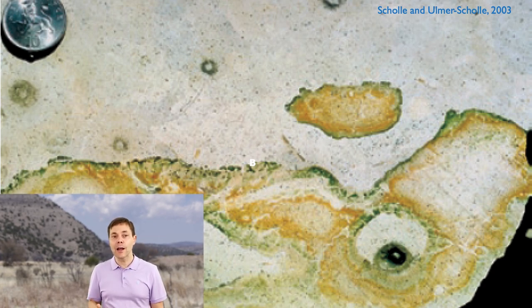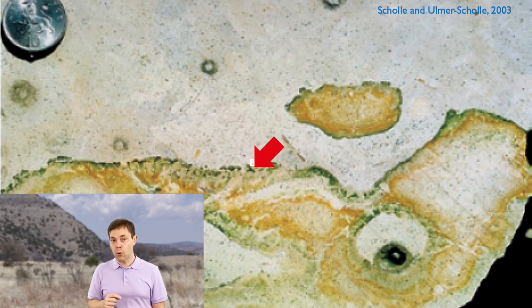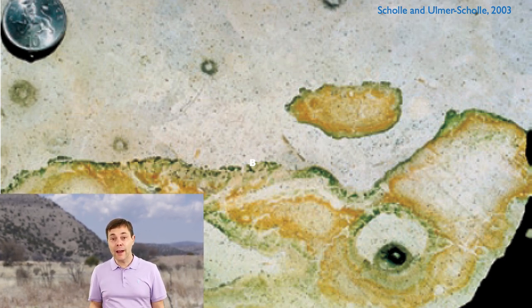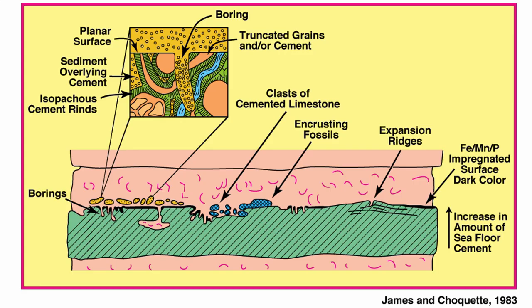Here's a Cretaceous example showing another really typical feature of hard grounds. Not only do you have a manganese crust, but you also have boring and rip-up clasts on top of the hard ground in the white sediment. That's when the current - perhaps during the next sea-level rise, during the next transgressive systems tract - ripped up pieces of that hard substrate and mixed them with the surrounding white sediment.